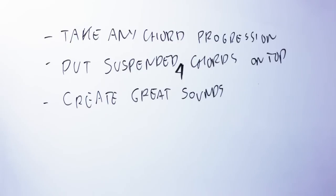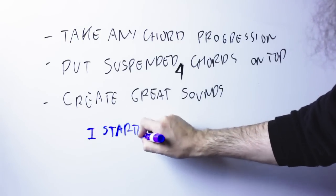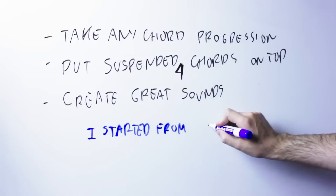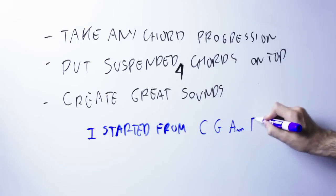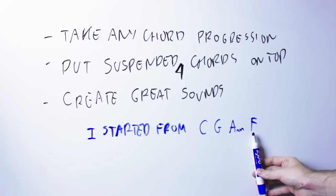Now, just to be clear, what I just played came from a very simple chord progression. It came from this chord progression, which is C G A minor F. Super simple chord progression and adding this suspended substitution created the wonderful chords I played at the very beginning.